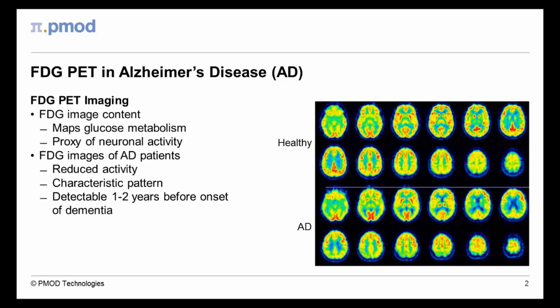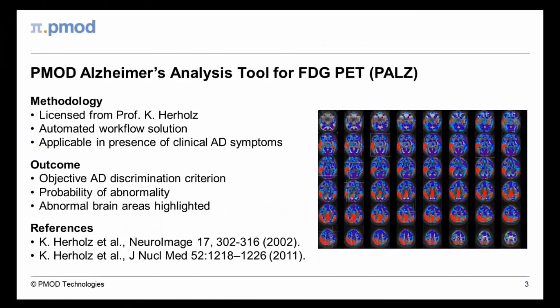A significant deviation from normal controls becomes detectable one to two years before the onset of dementia. Our Alzheimer's analysis tool is the licensed implementation of a validated methodology.